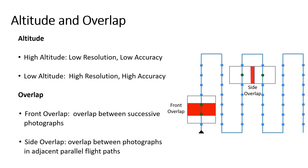Now we will discuss the altitude at which the drone should be flown and how overlap affects the quality of the map. Flying the drone at a higher altitude helps the camera cover more land in a single image with fewer batteries and less time overall, but flying at high altitude gives low resolution and low accuracy. On the other hand, flying at low altitude captures more details of an area and helps match common points while processing, increasing the image resolution and accuracy.